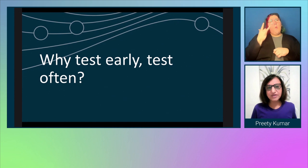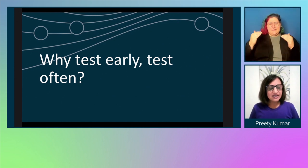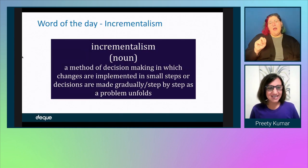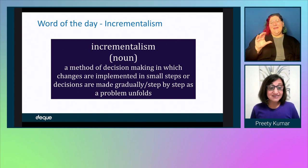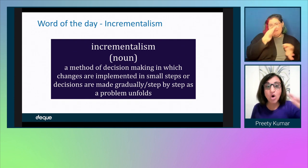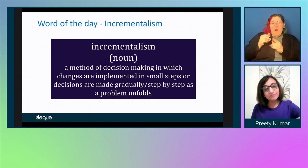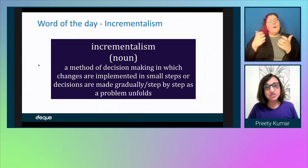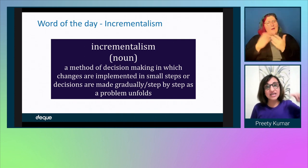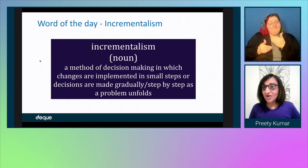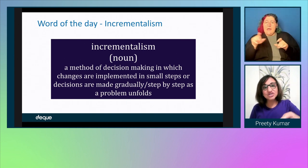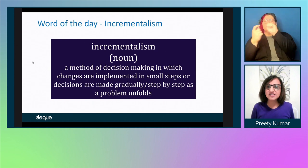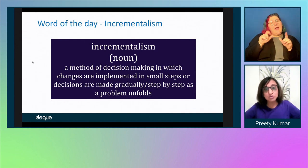Why test early, test often? Why do I need 12 steps? Think of it as aligned with Agile. The word of the day is incrementalism — a method of decision making in which changes are implemented in small steps, or decisions are made gradually, step by step, as a problem unfolds. We wanted to make sure accessibility testing fits into the Agile development paradigm. That means it's incremental, iterative. You make step-by-step progress as you code, unit test, end-to-end test, do regression tests and QA, and successfully refine those tests. Harris will be showing you how accessibility tests can be refined over time as you learn from the feedback loops provided by AXE DevTools.